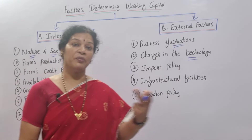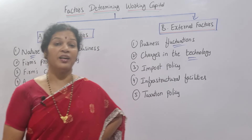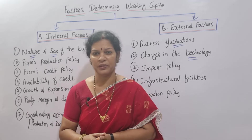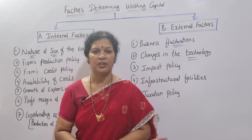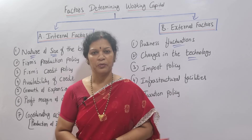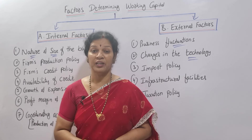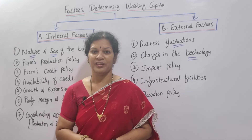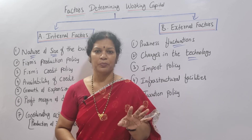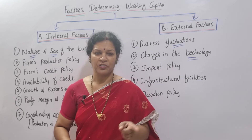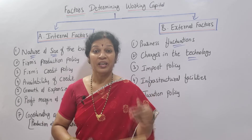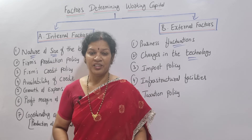Infrastructure facilities also affect working capital. If an organization has good infrastructure — good production facilities, energy supply, and warehousing — working capital needs are managed better. If there are no proper storage facilities, you cannot store goods and must keep producing in short cycles, which strains your working capital cycle.